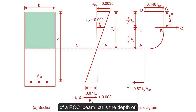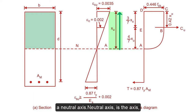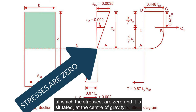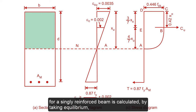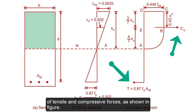x_u is the depth of the neutral axis. The neutral axis is the axis at which the stresses are zero, and it is situated at the center of gravity of the cross section. The depth of neutral axis for a singly reinforced beam is calculated by taking equilibrium of tensile and compressive forces as shown in the figure.